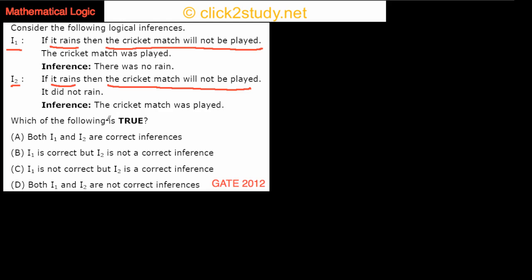We need to determine which of I1 and I2 are correct inferences — both, only one, or none. Let's assign identities: let P represent 'it rains' and Q represent 'the cricket match will not be played.'